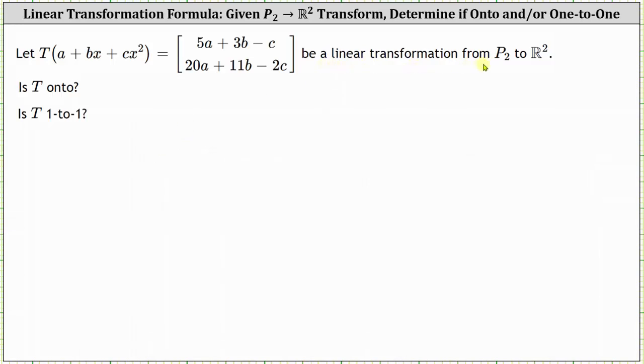Let the transformation be a linear transformation from P2 to R2. Is T onto? Is T 1 to 1?